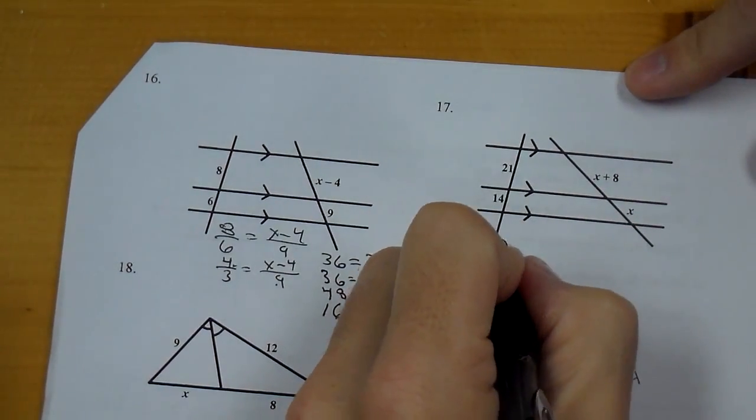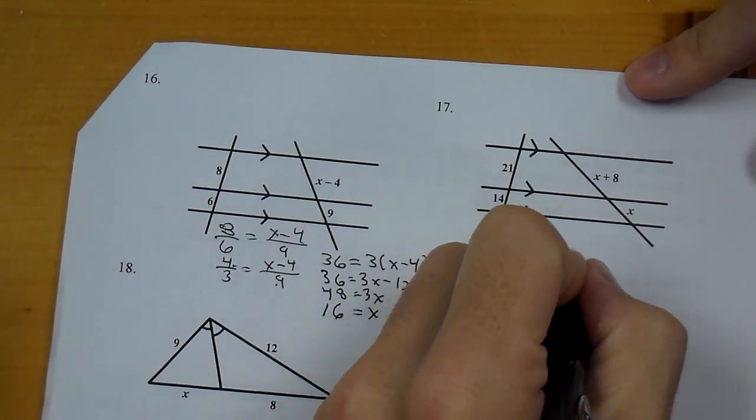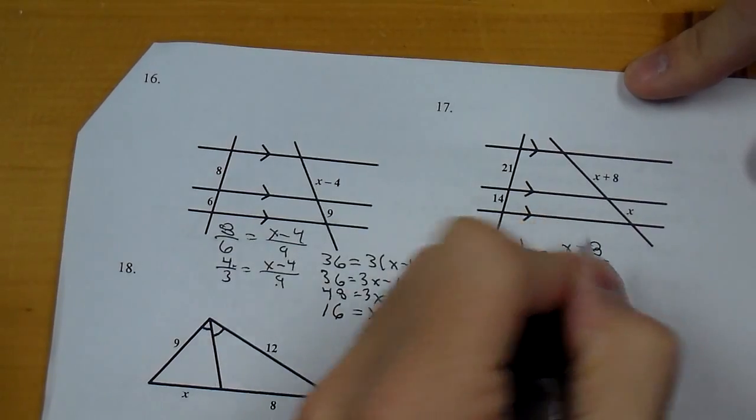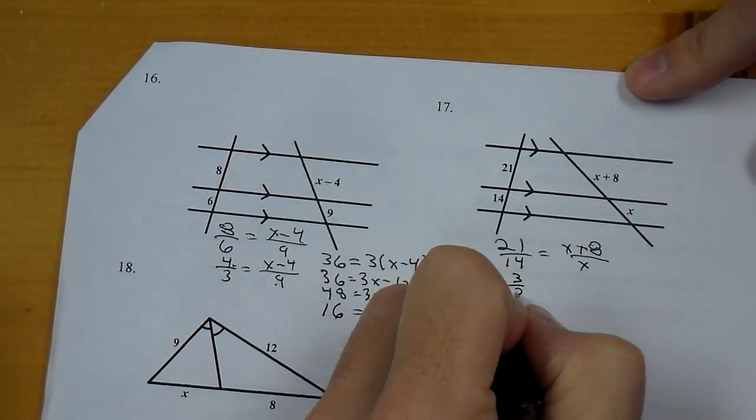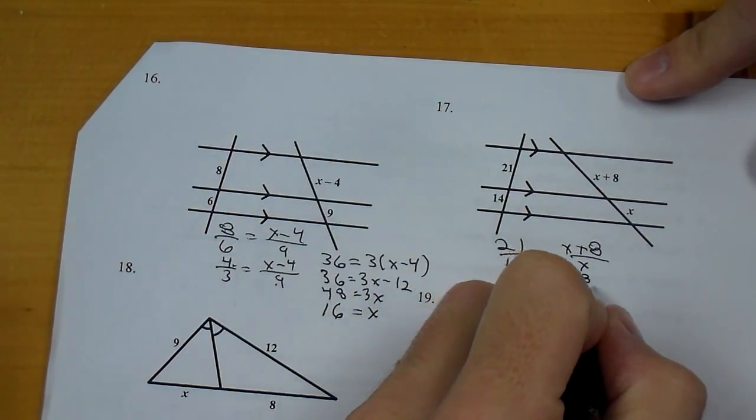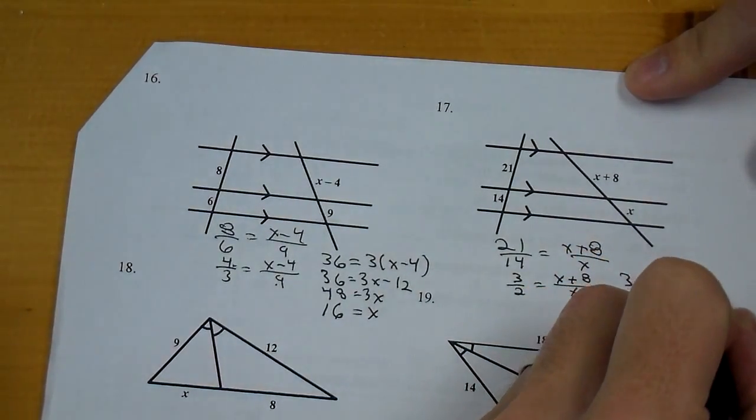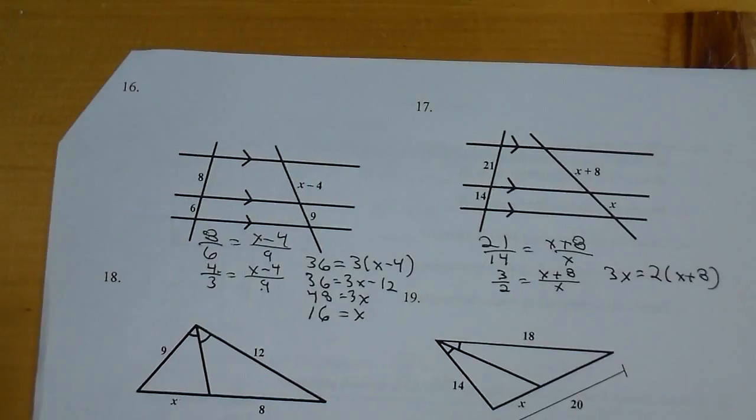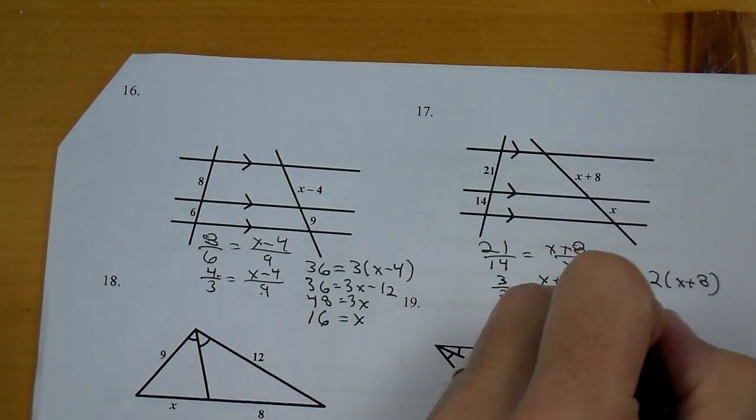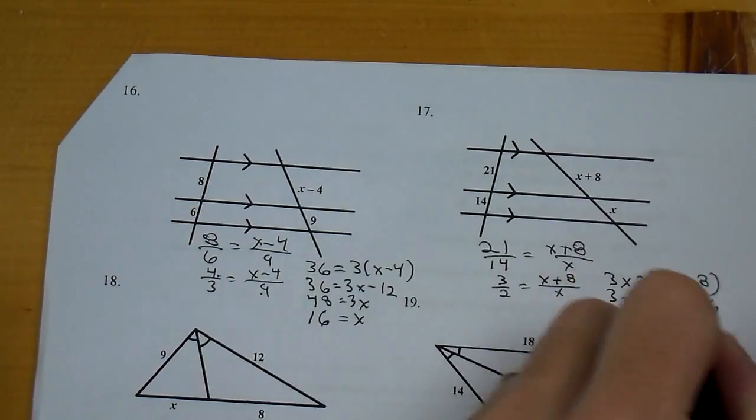For number 17, we're going to go 21 over 14 equals X plus 8 over X. This becomes 3 over 2. So we have 3X equals 2 times X plus 8. That's 2X plus 16, which becomes X equals 16.